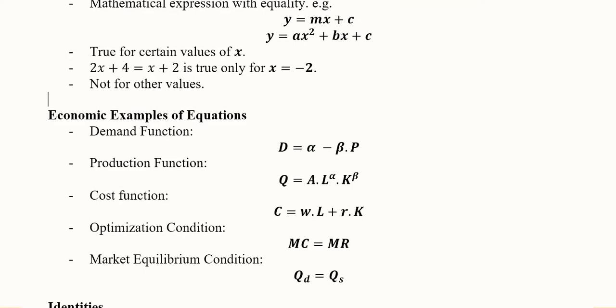Let's consider a few examples and these are from economic science. Demand function, we have a demand function, so it's an equation in economics. Production function, it's another equation in economics. Cost function, this is how the equation looks like. Then optimization condition, this is the equation of it. And the market equilibrium condition, this is the equation. So all of these are equations.